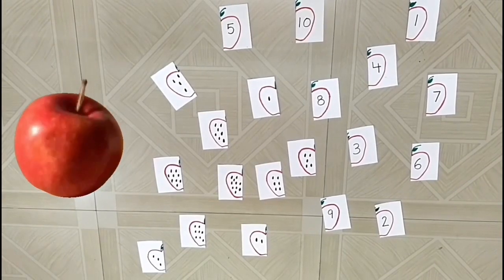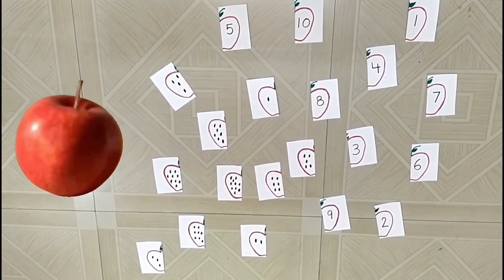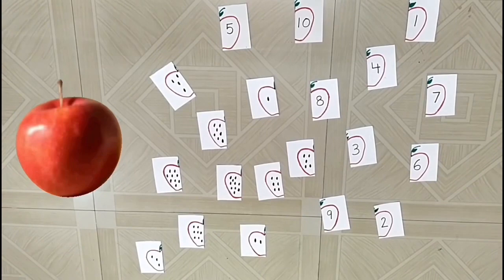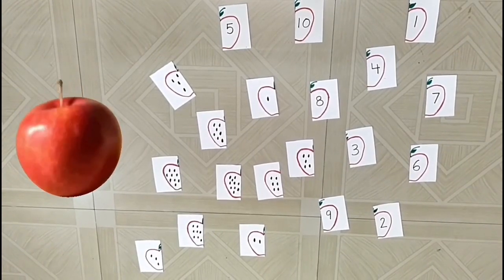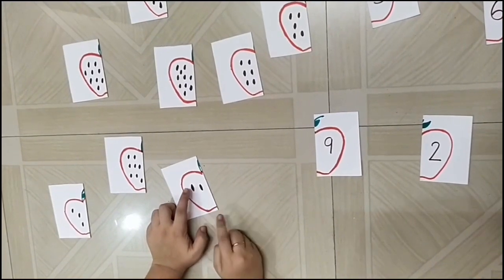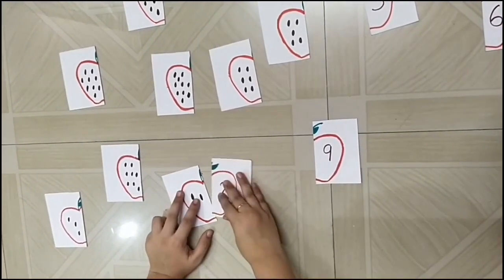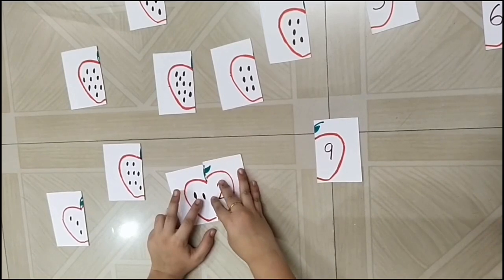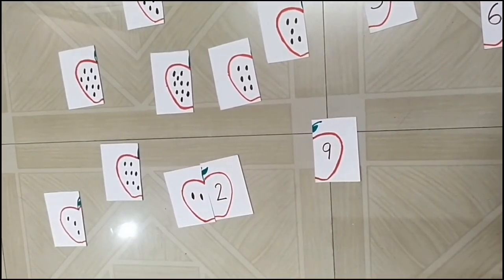All you need to do is count the seeds and then join them with the apple that has that number on it and complete the apple puzzle. For example, how many seeds does this apple have? Two. Right? So look for the apple with two written on it and join them.